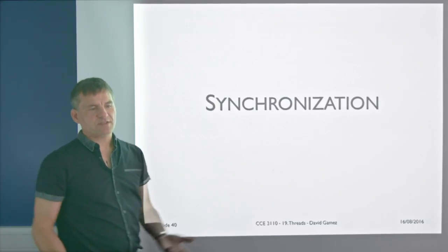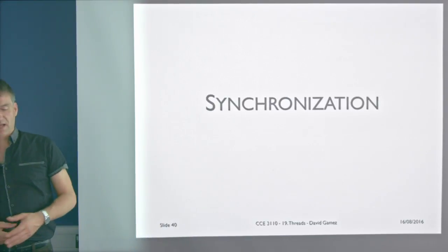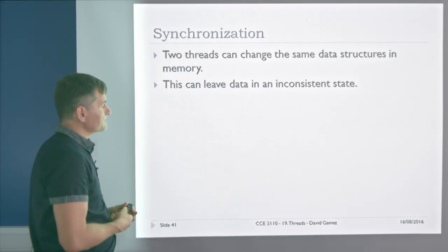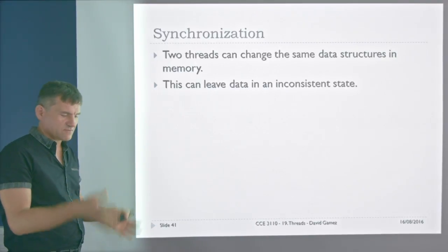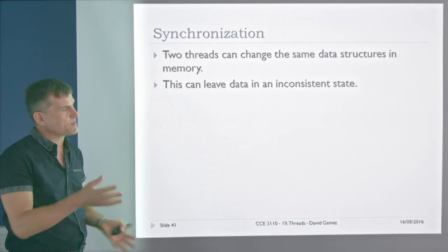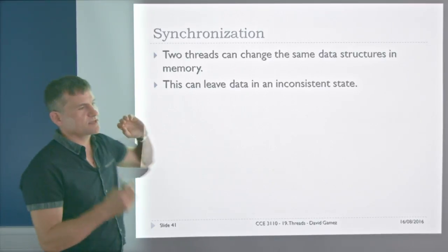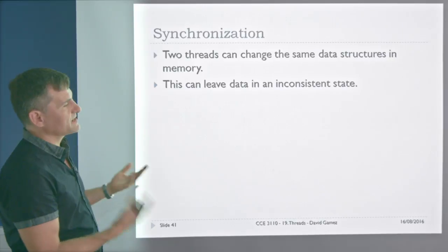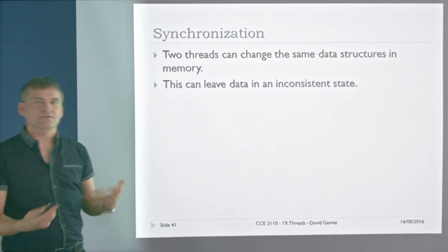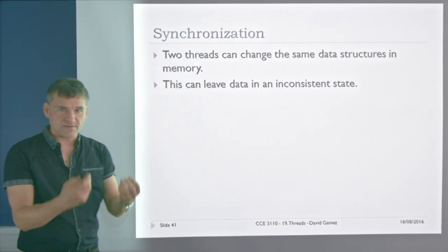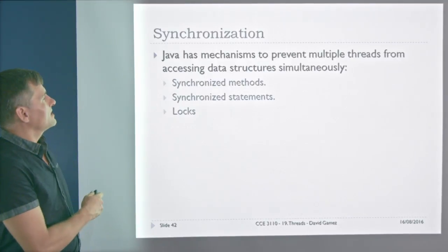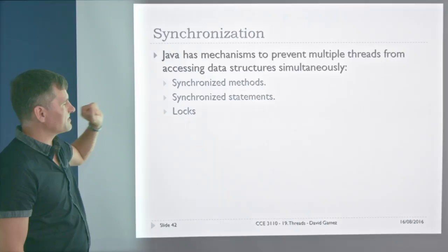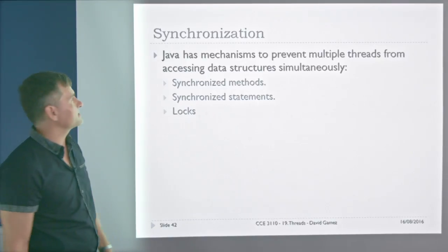That's the basics of running threads in Java, shutting them down, and useful methods. Now, synchronization. Threads are separate processes running in indeterminate order, and the tricky issue is that two threads can access and modify the same data structure simultaneously, leaving data in an inconsistent state unless access is appropriately synchronized. Java has three mechanisms for this: synchronized methods, synchronized statements, and locks.